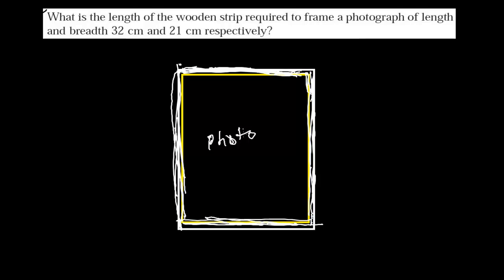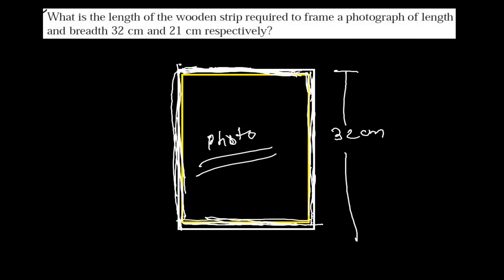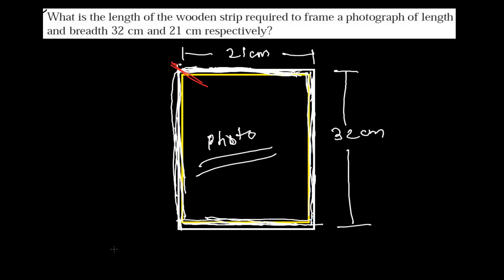This outer covering is the wooden strip, and inside this wooden frame we will put our photograph. Our photograph is of length 32 centimeter, and our breadth is 21 centimeters. So the length of our photo is 21 centimeters.